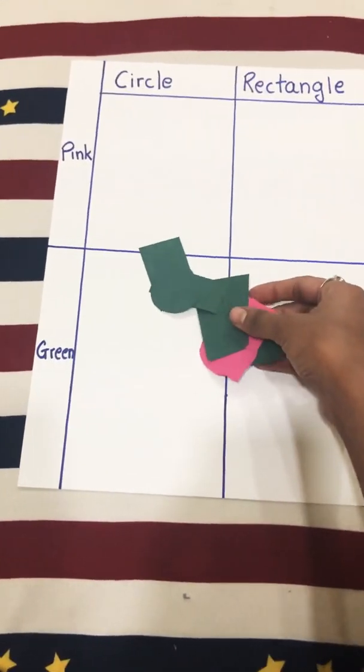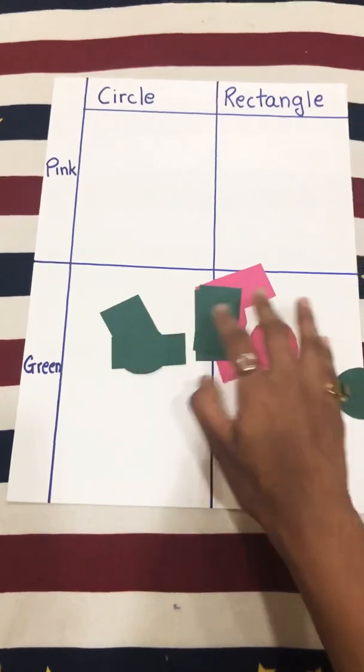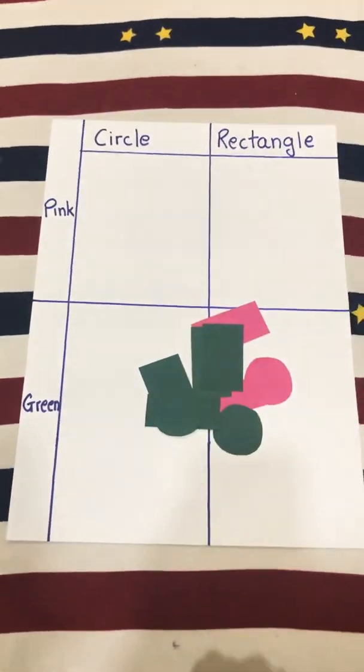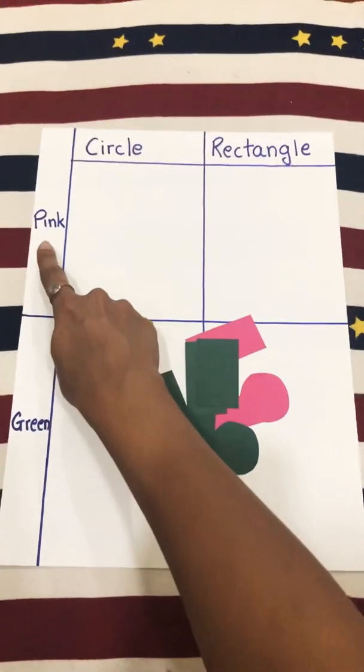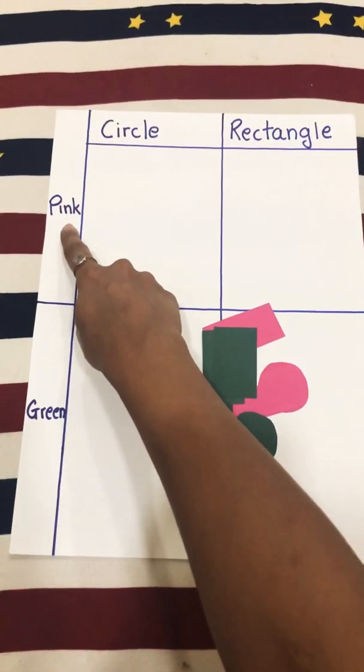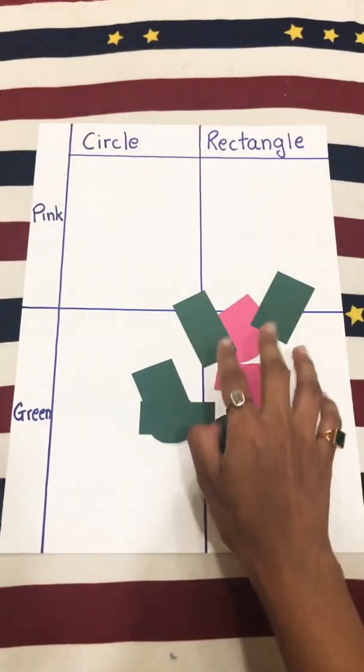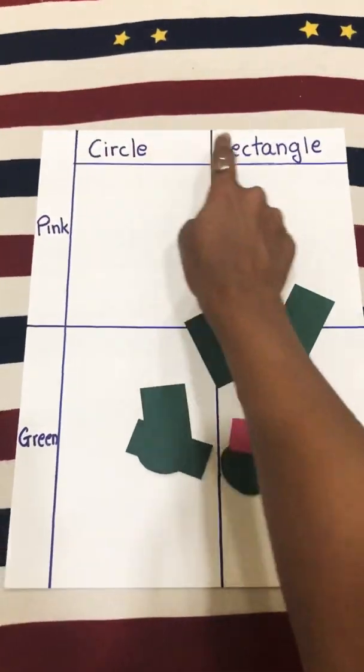So here I have certain shapes with me—two shapes of two different colors, which is what I have represented on my table, the Carroll diagram. On the left-hand side, I have written the two colors that I have: pink and green, and the two shapes that I have, which are circle and rectangle.